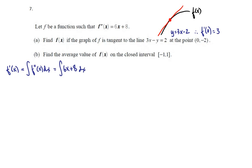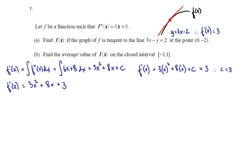We know that f'(x) is the integral of 6x plus 8 dx. The antiderivative of 6x is 6x squared over 2, which is 3x squared, and the antiderivative of 8 is 8x, plus c. But we know that f'(0), which is 3 times 0 squared plus 8 times 0 plus c, has to equal 3, so in this case c is 3. Finally, f'(x) equals 3x squared plus 8x plus 3.